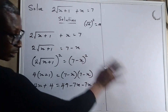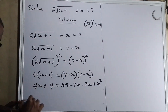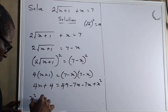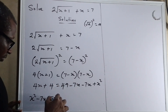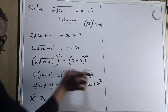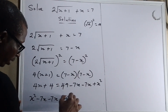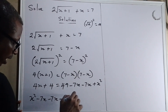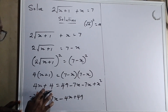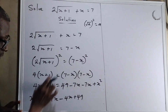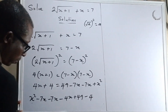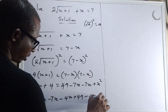Now let's move everything to one side. So we have x squared. Then minus 7x minus 7x. Now let's move 4x to this side, giving minus 4x. Then 49 and we have plus 4 here, so moving it over becomes minus 4, equals to 0.